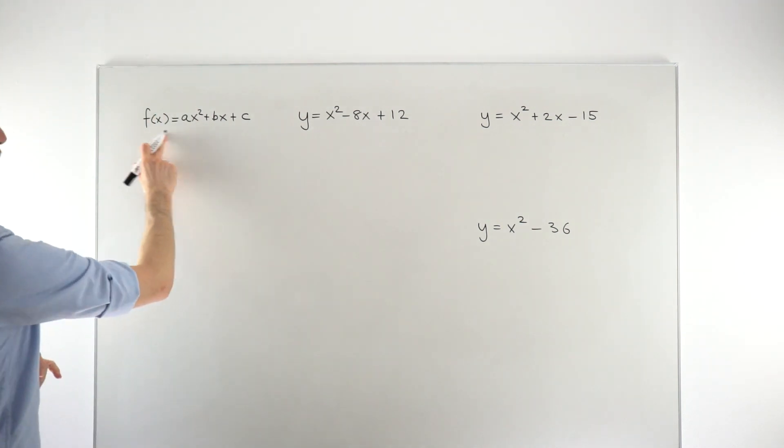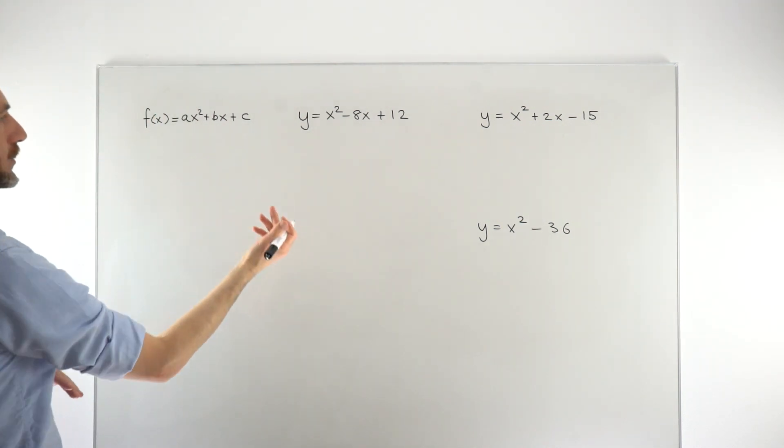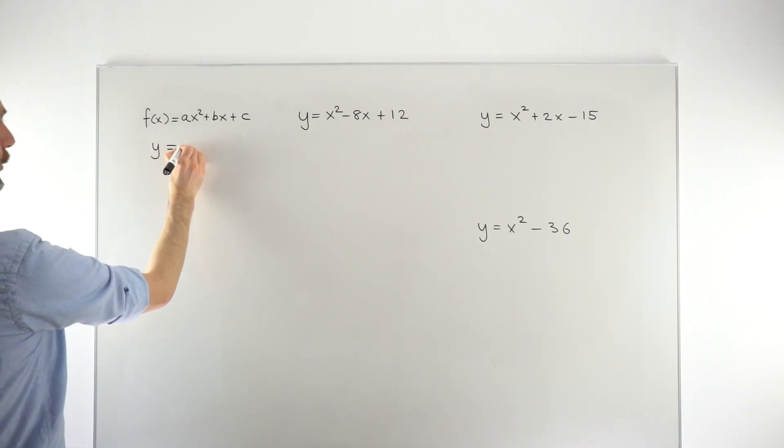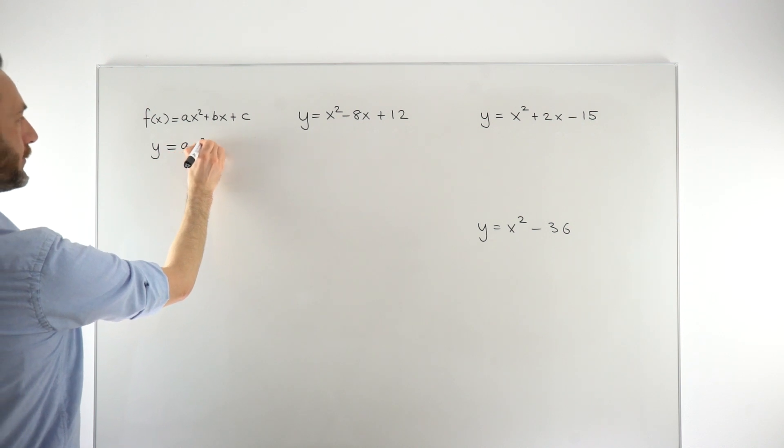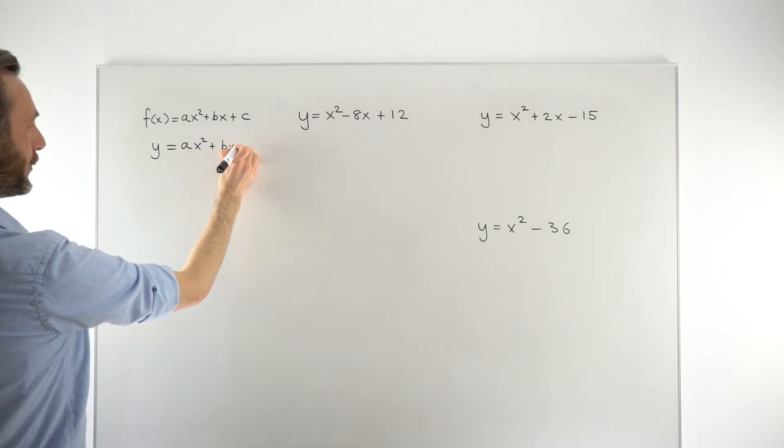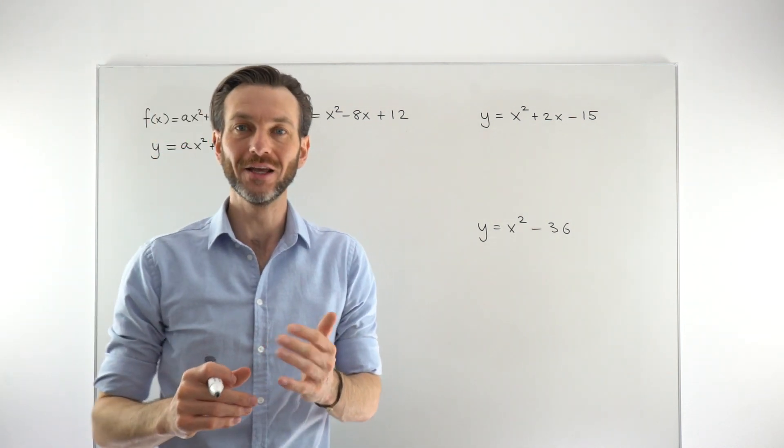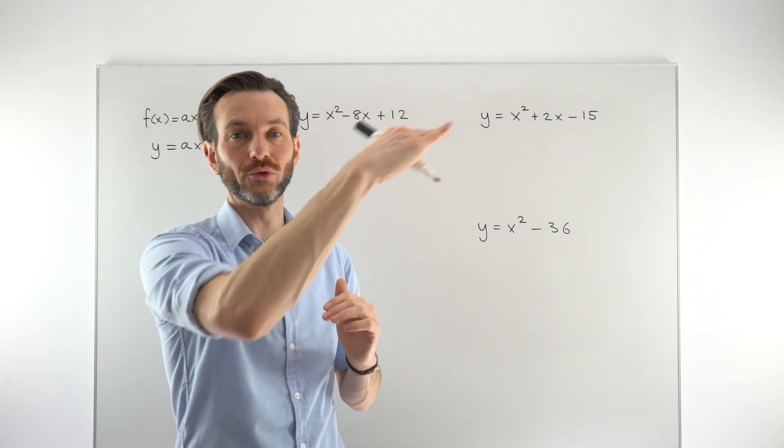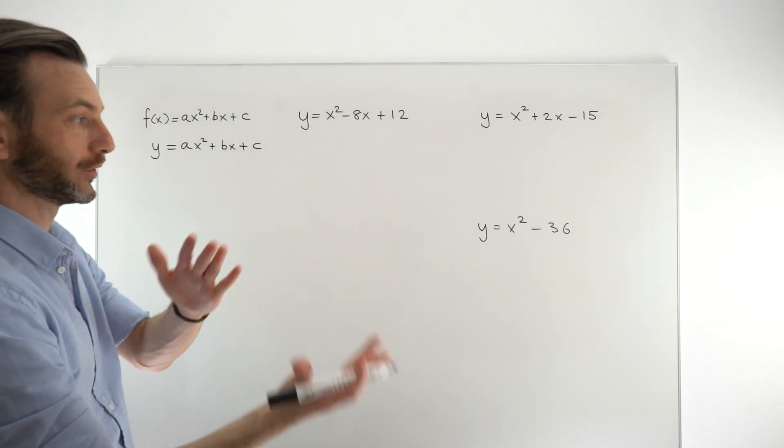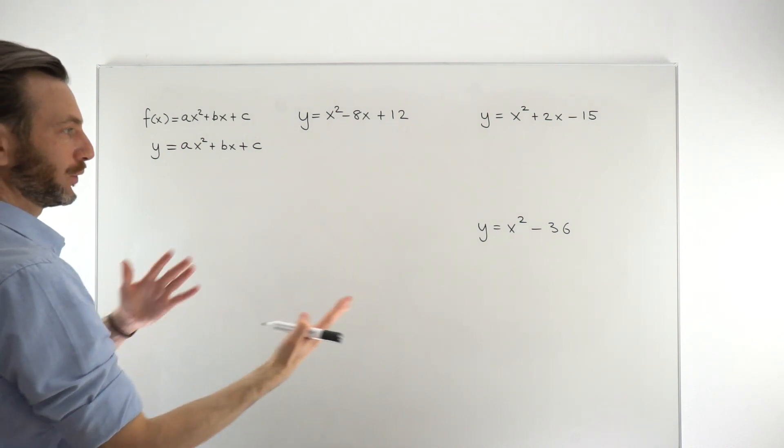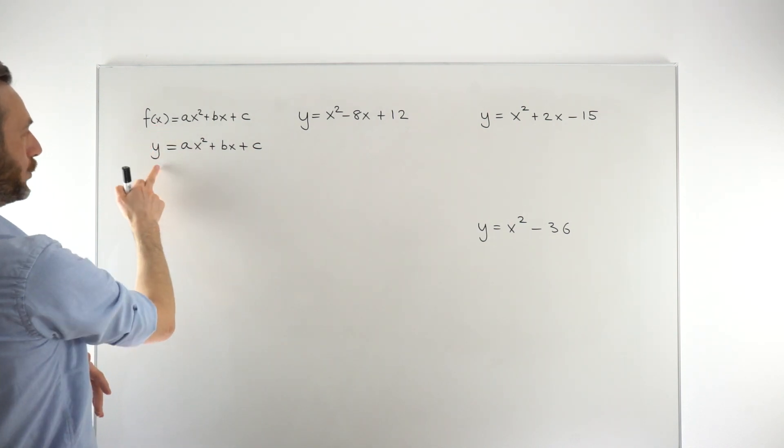This is our general quadratic function. When we start to think about the graphs of functions, we change the f of x notation into y. That's basically just because f of x is thinking of this as a function, like a rule. When we're talking about points on a graph, we use an xy graph, an xy axis. So we change the f of x to y.